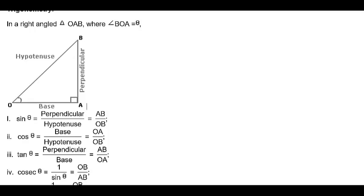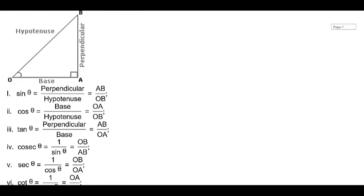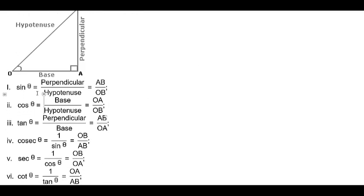Similarly, cosec theta is equal to 1 by sin theta — it is the reciprocal of sin theta. Since sin theta is AB by OB, cosec theta is OB by AB. Sec theta is the inverse of cos theta, so OB by OA. And cot theta is the inverse of tan theta, that is OA by AB.